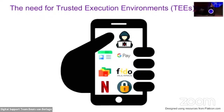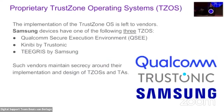Modern Android devices use ARM TrustZone for implementing a Trusted Execution Environment, or TEE. This transfers a separate isolated trusted operating system running in parallel to Android. There are many different trusted OS and trusted applications; often they are vendor-specific and their design details and implementations are kept secret.